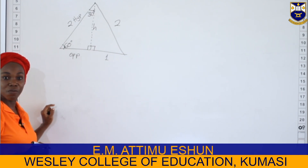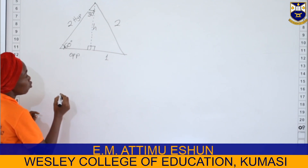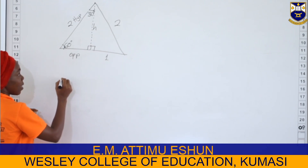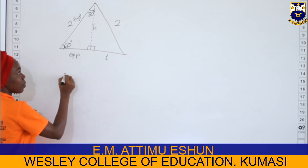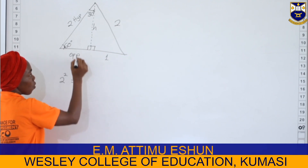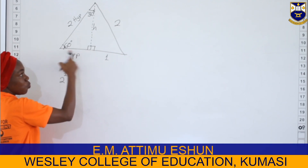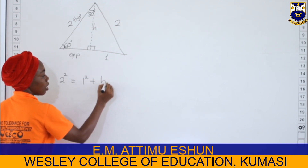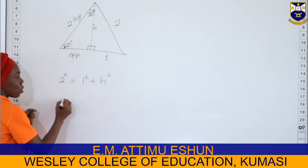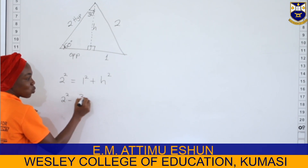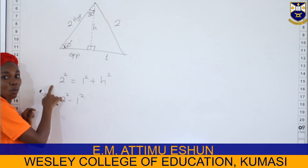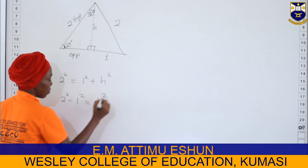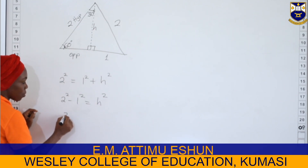To find the length of the height of that triangle, we use the Pythagorean equation. The hypotenuse squared — two squared — equals the opposite side squared plus h squared: so 2² = 1² + h². Transposing gives us 2² minus 1² equals h squared.